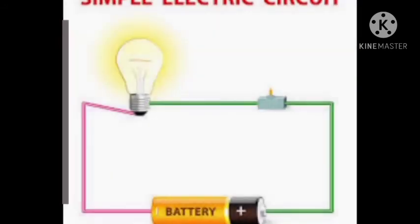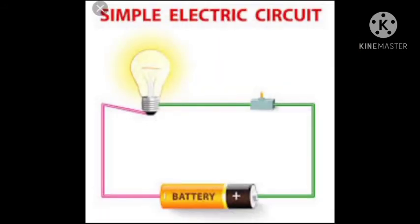An electric circuit contains a battery — or cell — which is a source of electric current. Electric current can flow between the two terminals of a cell through conducting material when all components are well connected: battery, switch, connecting wire, and any device, connected in a suitable manner.